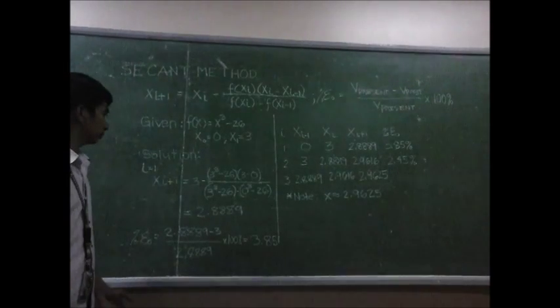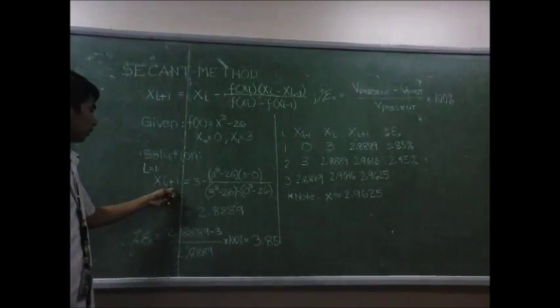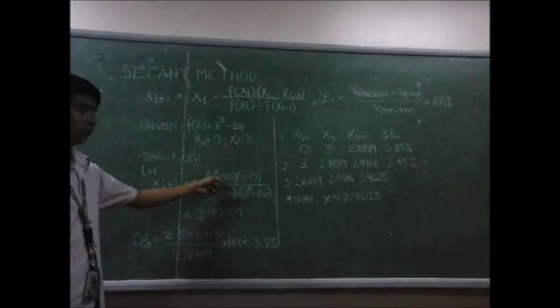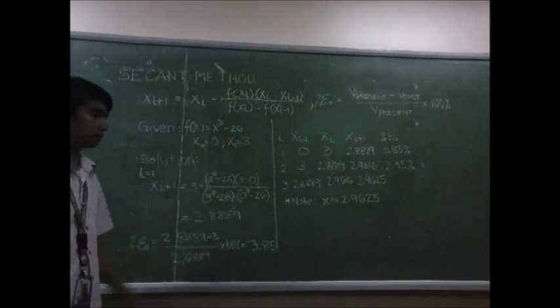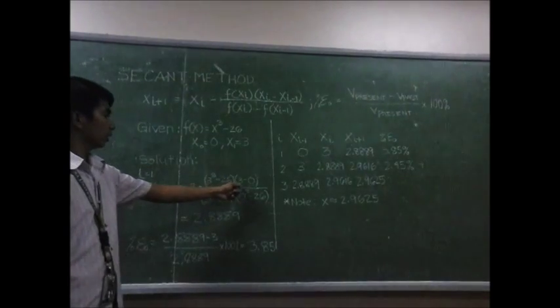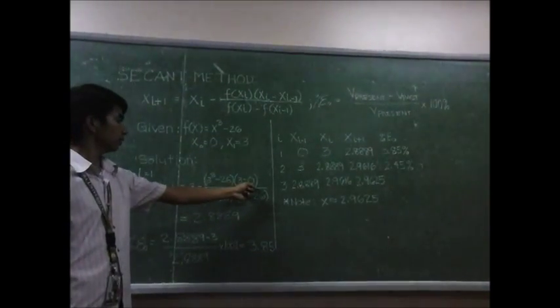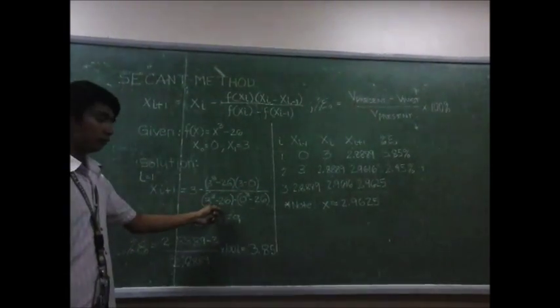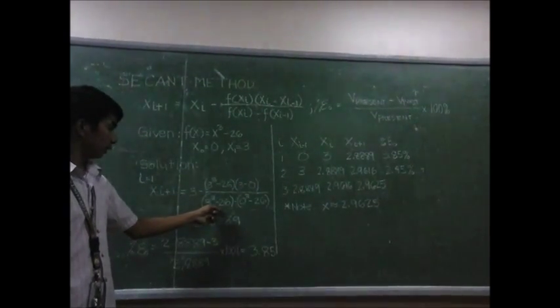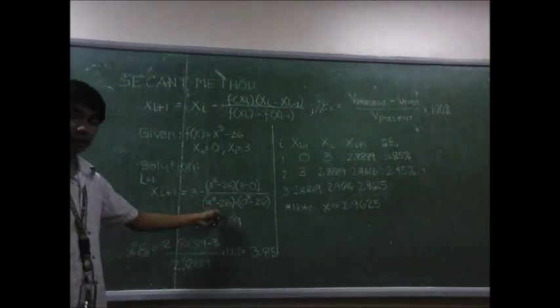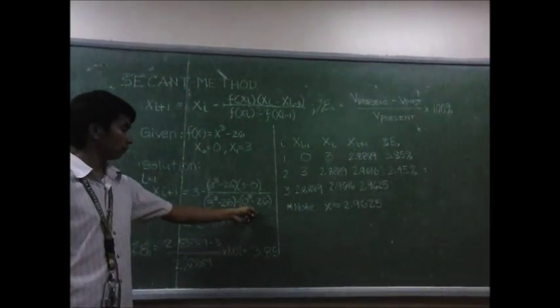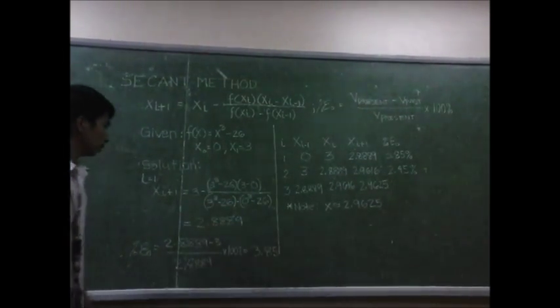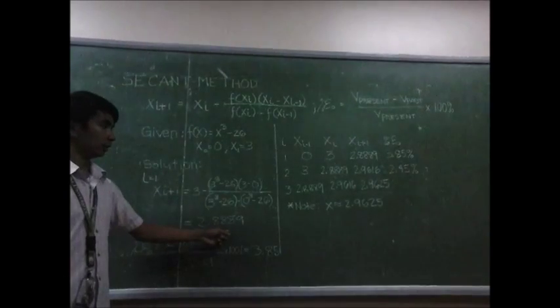For our first iteration, x_{i+1} equals 3 minus f(x₁), which is 3³ - 26, times (x₁ - x₀), which is 3 - 0, all over f(x₁), which equals 3³ - 26, minus f(x₀), which equals 0³ - 26. The obtained value is 2.8889.